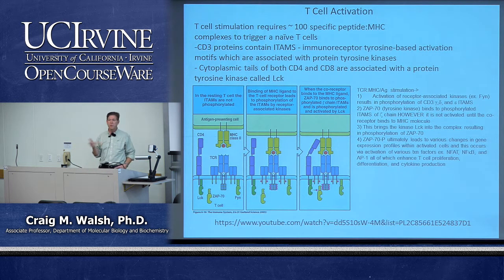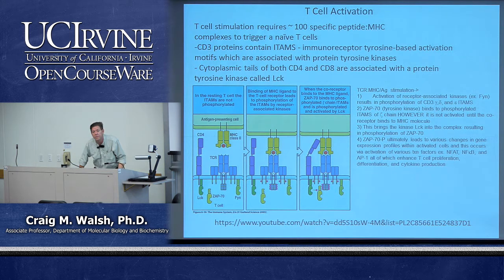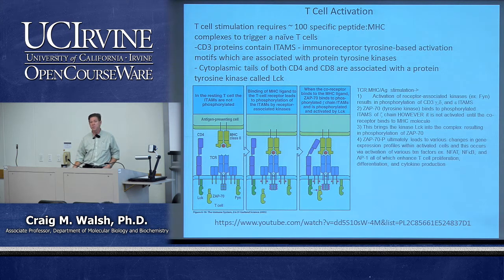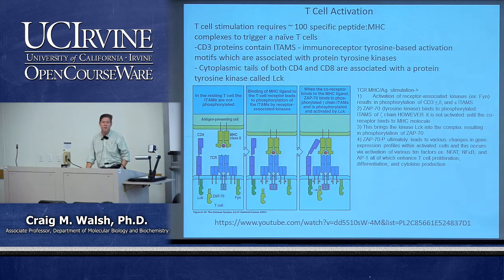By blocking T cells, a transplant won't get rejected. Another reason to block a T cell response would be an autoimmune situation — you wouldn't want someone having an autoimmune reaction causing damage to tissue inside the body. There's a lot of effort on the part of scientists and drug companies to identify these pathways.